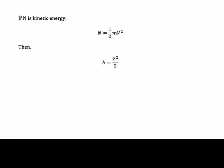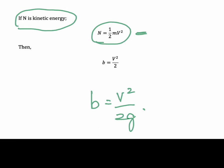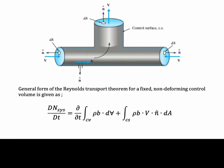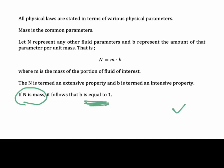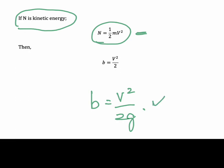As another example, if we want to analyze kinetic energy, we set N equal to ½mv². According to the relationship N equals m times b, the value of b must be v²/2 — or more precisely v²/(2g) — to ensure that the units match the kinetic energy equation.